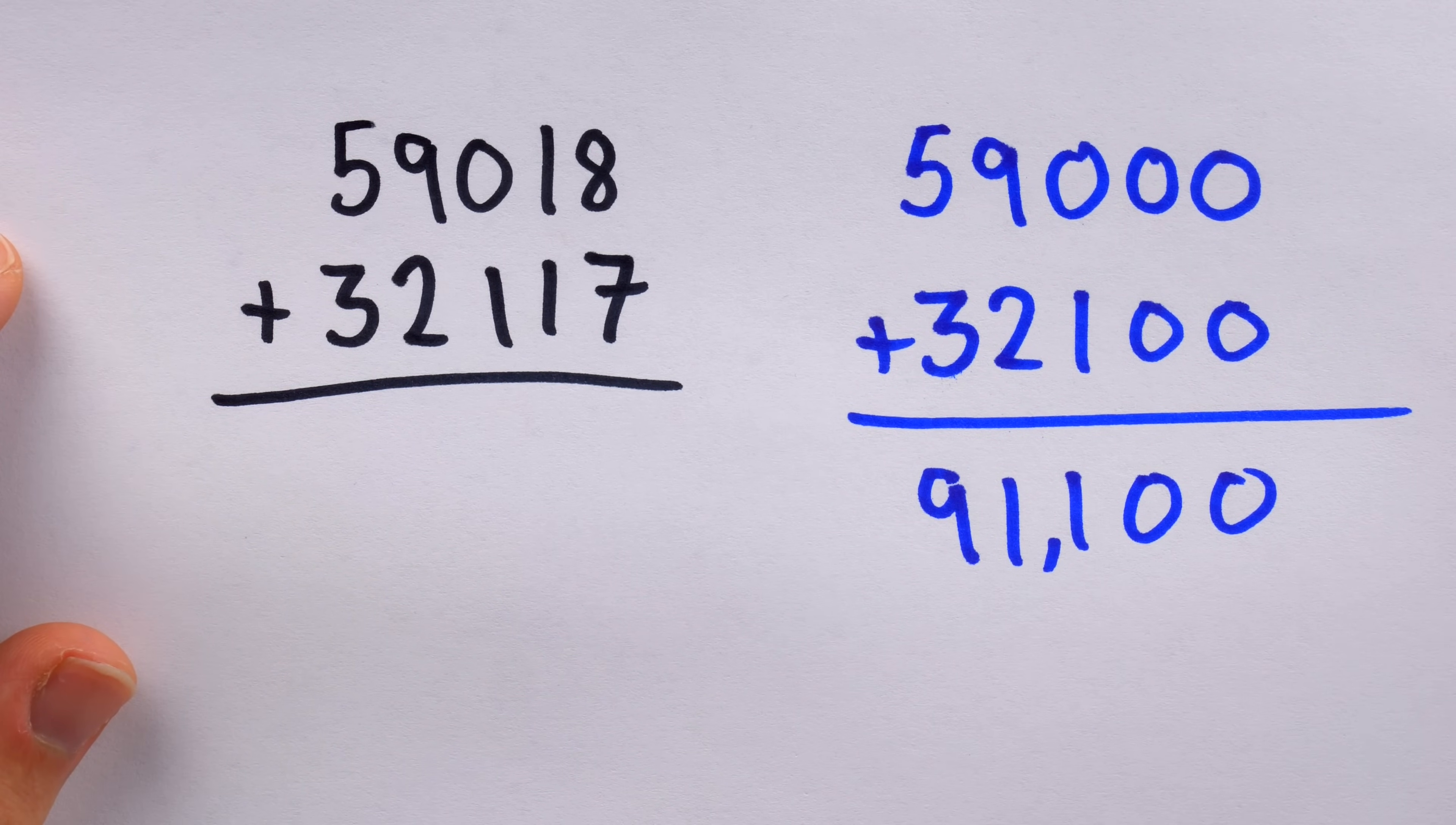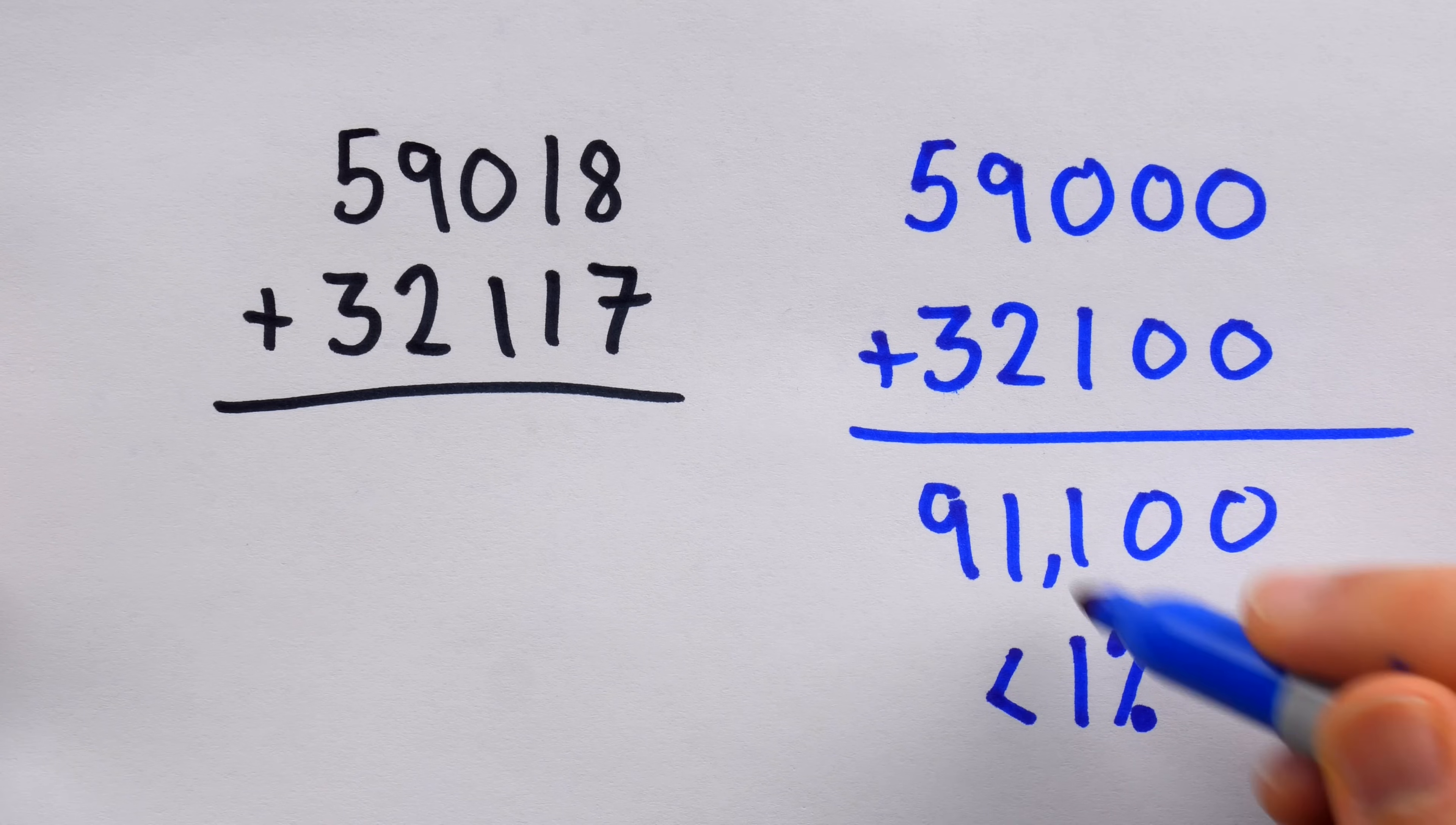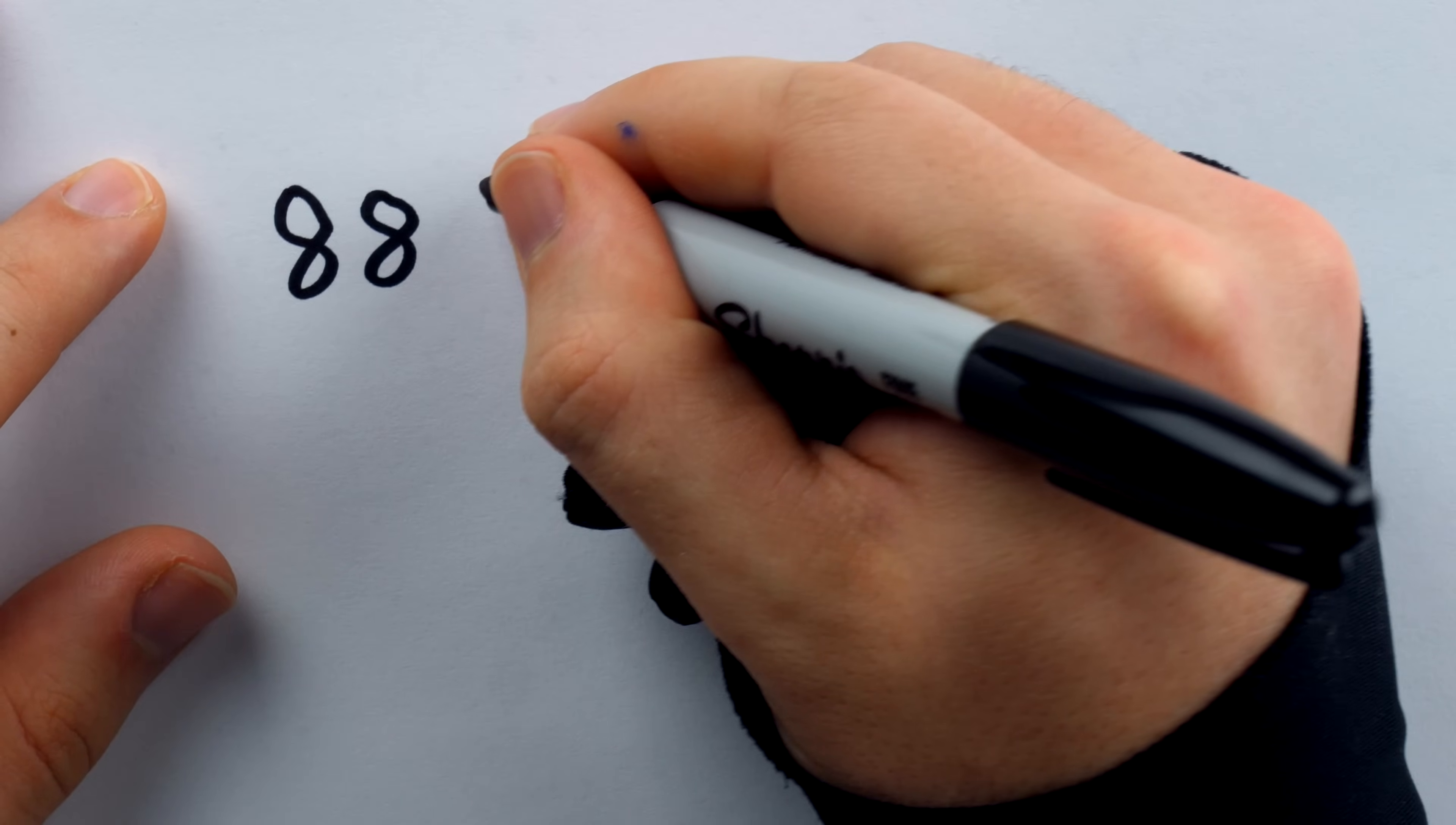Just how good of an estimate is this? Well, it's only off from the true answer by 35. If we're using this technique of estimation with five digit addition problems, our error is always going to be less than 1%. Because like I said, our error is at most 100. And for a five digit addition problem, the correct answer is going to be bigger than 10,000. So the error less than 1%, you can get some great estimations really easily. And estimation is powerful because it scales up pretty well.